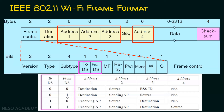When From DS is set to 1 (i.e., To DS = 0, From DS = 1), address 1 is the destination, address 2 is the sending access point, and address 3 is the source node's MAC address. When To DS = 1 and From DS = 0, address 1 is the receiving access point, address 2 is the source node, and address 3 is the destination node. When both are set to 1, address 1 is the receiving access point, address 2 is the sending access point, and addresses 3 and 4 are the destination and source node MAC addresses respectively.